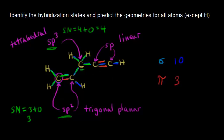Finally, let's use steric number for the sp carbon. Steric number equals the number of sigma bonds plus lone pairs of electrons. There are two sigma bonds around that carbon and zero lone pairs of electrons. A steric number of two means I need two hybridized orbitals, and sp hybridization gives exactly two sp hybridized orbitals.